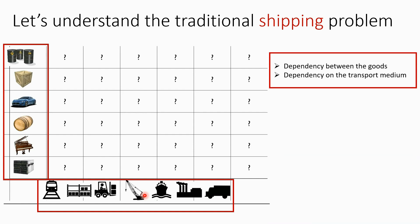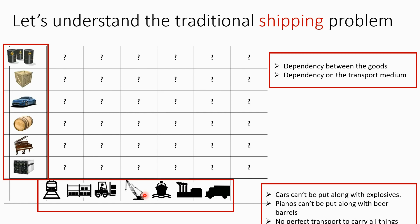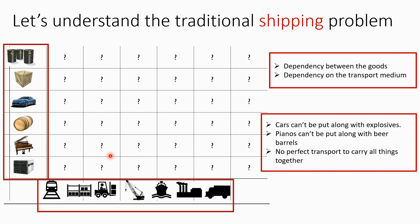The problem here is all these things have a dependency between them. There is a dependency between the goods and a dependency on the transport medium. Cars can't be put along with explosives, and pianos can't be put along with beer barrels. There is no perfect transport to carry all these things together — for example, I cannot hang my piano by a crane, and similarly I cannot transport the explosives in a truck or a car.